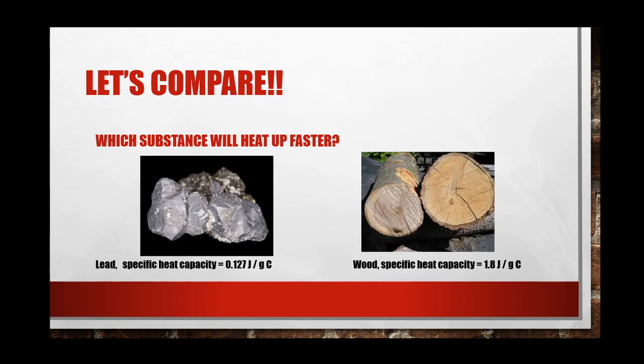Let's do some comparisons. Which substance will heat up faster: lead, which has a specific heat capacity of 0.127, or wood, which has a specific heat capacity of 1.8? The answer is lead — it has a lower specific heat, which means it takes less energy to heat up, so it will heat up faster.